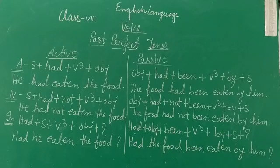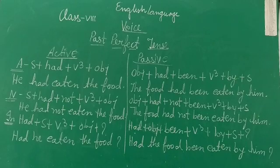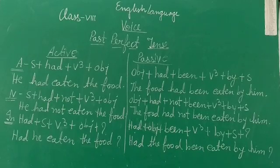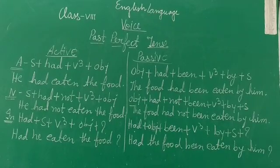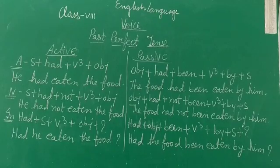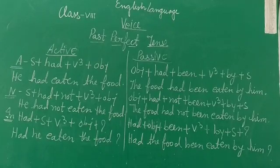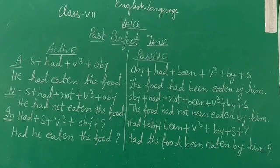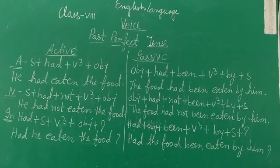If our active voice is in affirmative of past perfect tense, it's subject plus had plus V3 plus object. The passive form will be object plus had been plus V3 plus by plus subject. Subject becomes object and object becomes subject in the passive form.